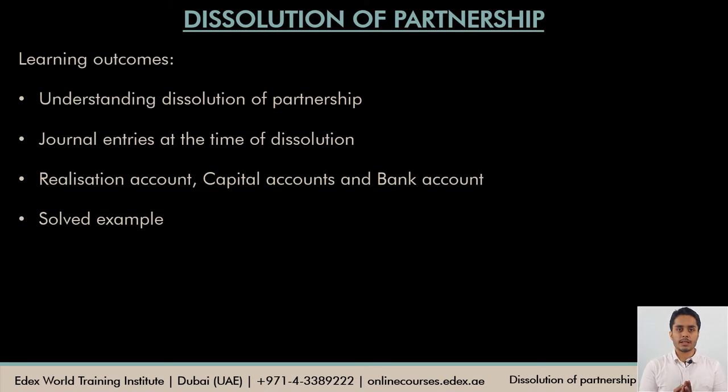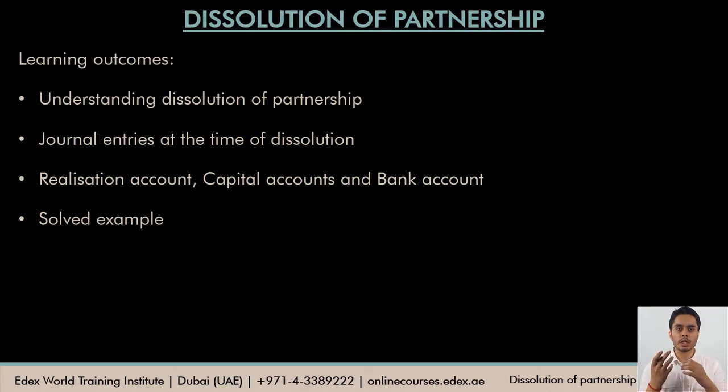This one is completely different. The accounting entries are not similar to what we've studied in the previous two videos. In this video we're going to study what accounting entries are to be passed when the firm is completely dissolved. The firm has to be closed for certain reasons. We first understand what is meant by dissolution and why would a firm dissolve. We would look at the journal entries at the time of dissolution — the journal entries are the key to understanding accounting treatment for any topic, and hence I always start with the journal entries.